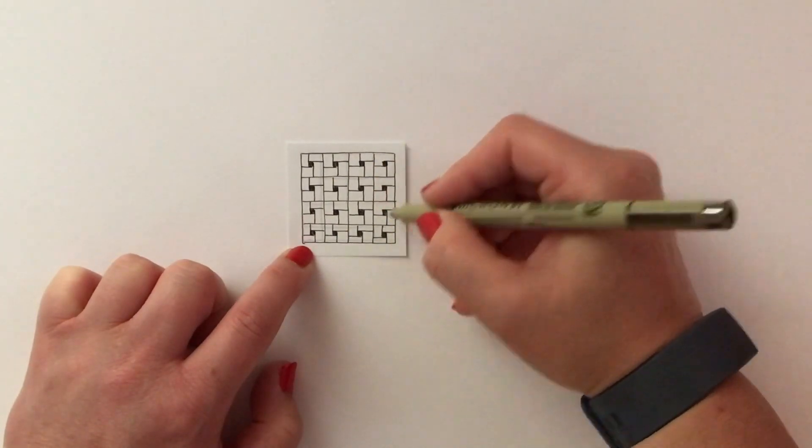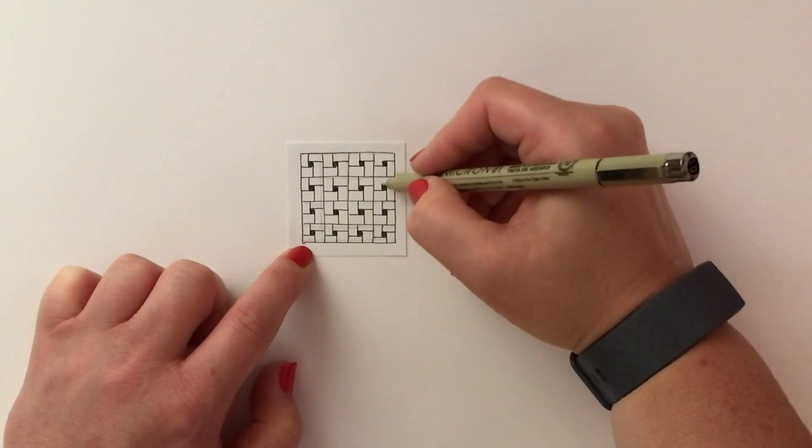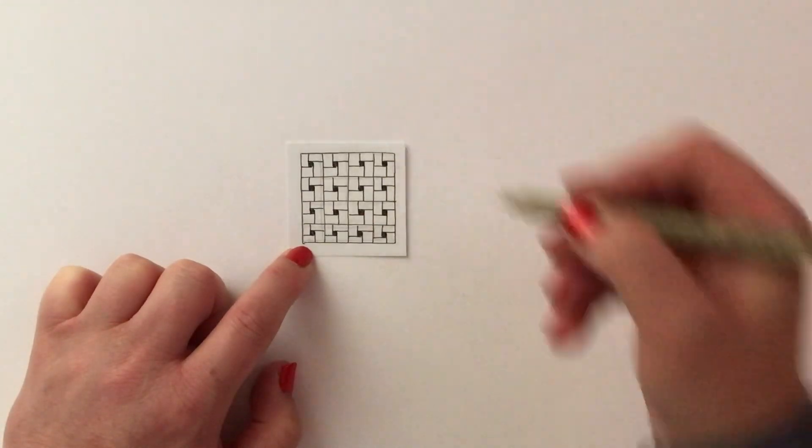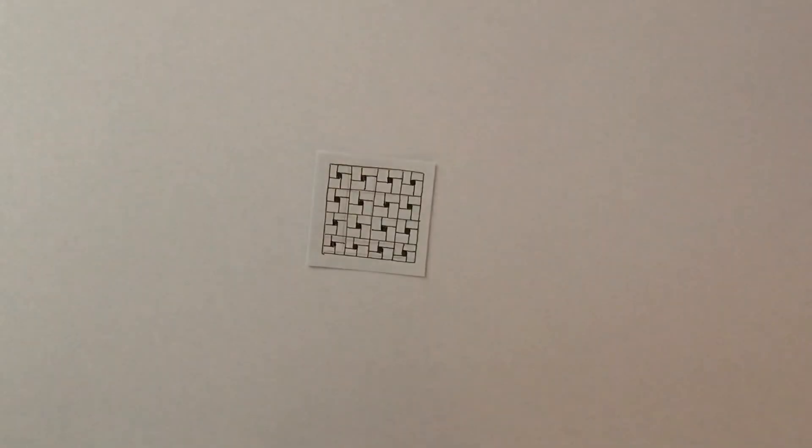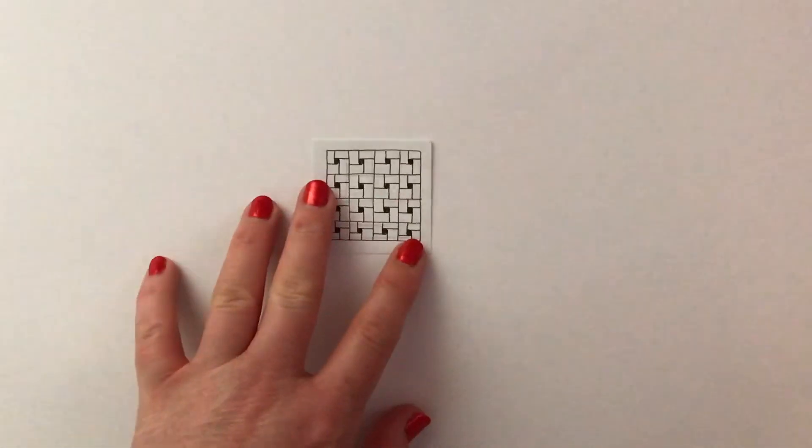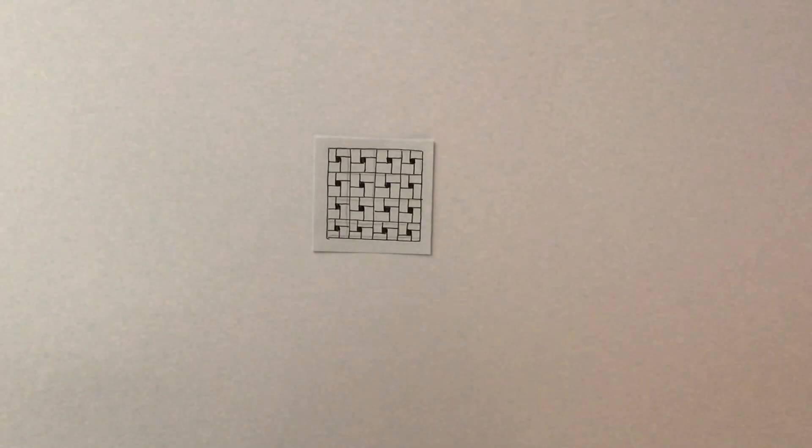So we've now drawn a line around each side of those solid black squares.